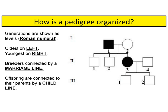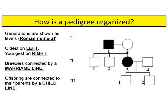Individuals are placed on the pedigree chart from oldest to youngest. So in generation two, this individual here would be the oldest, and this individual over here would be the youngest. When people have children together, they are connected by a marriage line. We have two marriages in this particular pedigree. Children are connected to their parents by a child line. We can see three children that come off of this marriage line — two boys and a girl — and two children off of this marriage line, two boys.